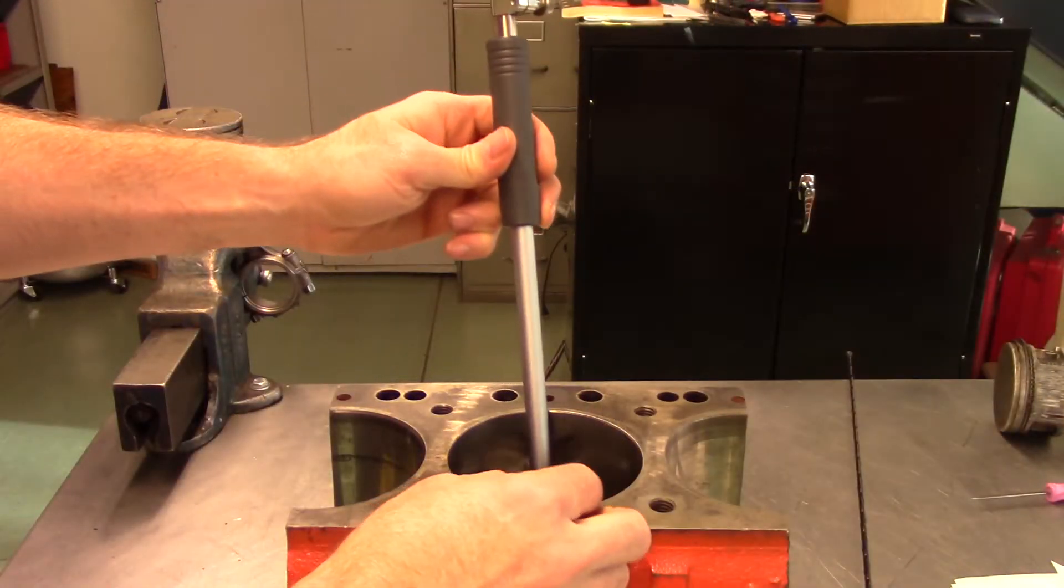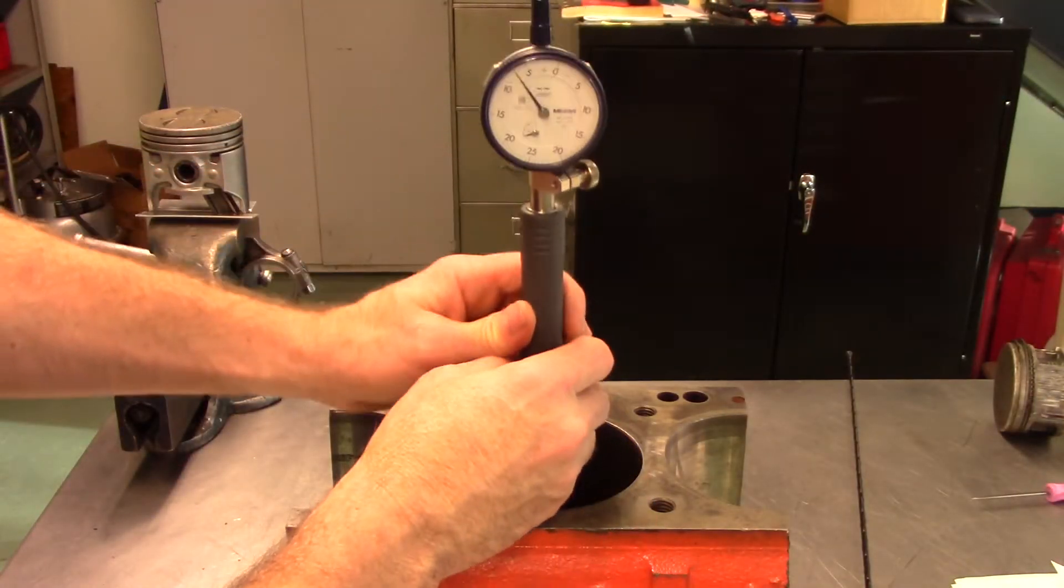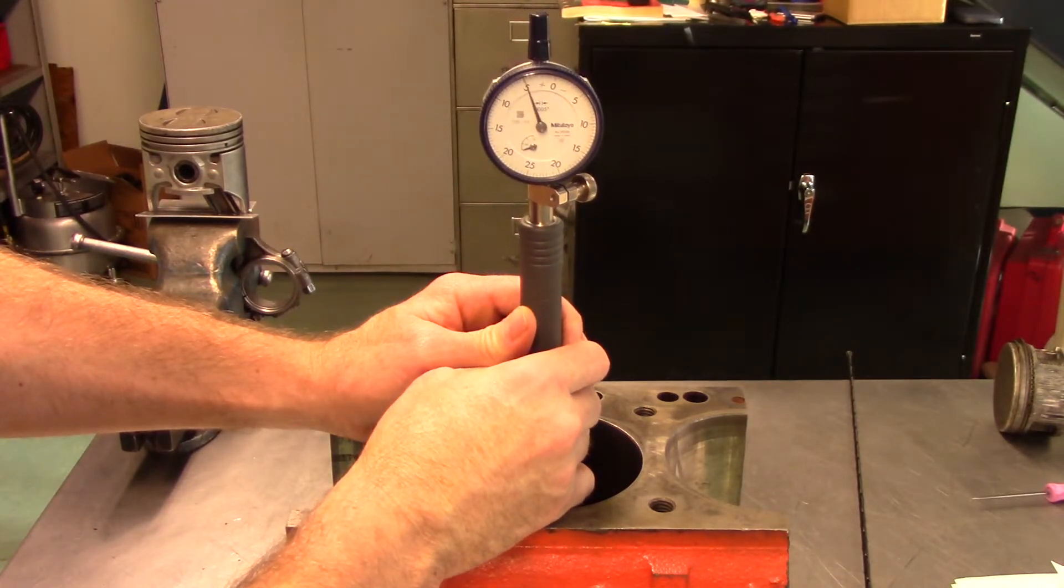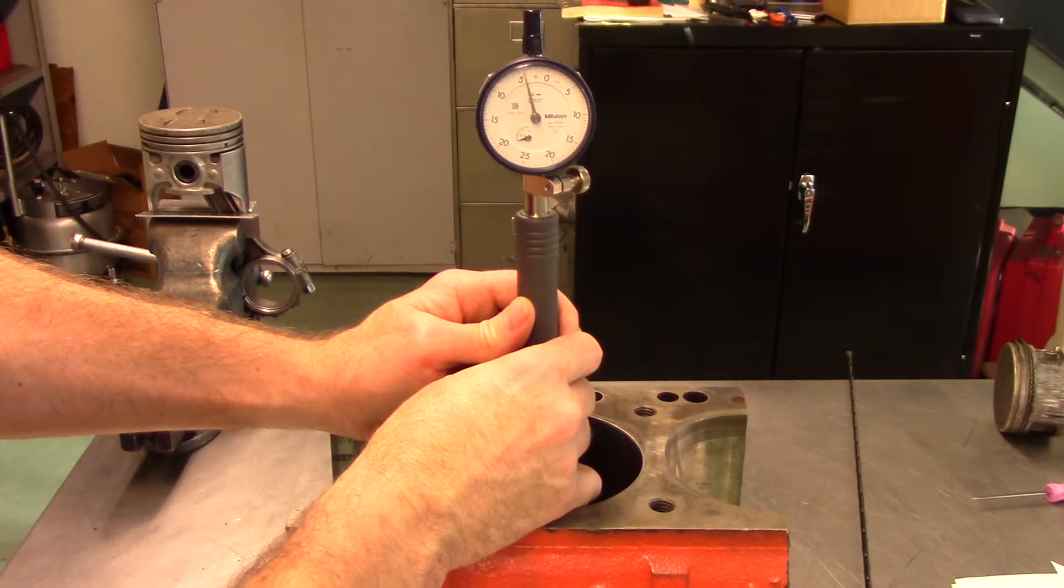Place the zeroed bore gauge into the cylinder bore and measure across the major and minor thrust side at a location just below ring travel at the bottom dead center position.